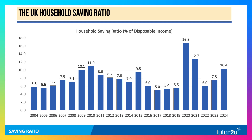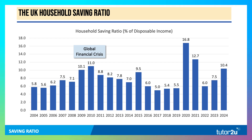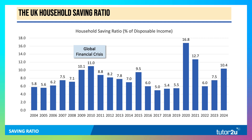The ratio was low during the early part of the period — we have about 20 years of data here — but it increased quite significantly in the wake of the global financial crisis. The UK economy was in recession in 2009, and the savings ratio jumped from 7.1% to 10% and then 11%.